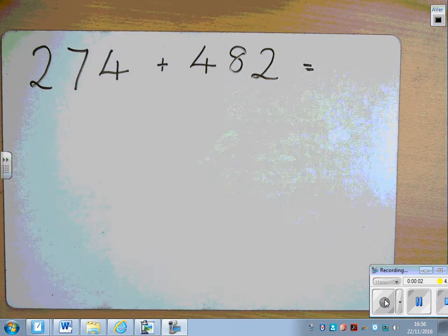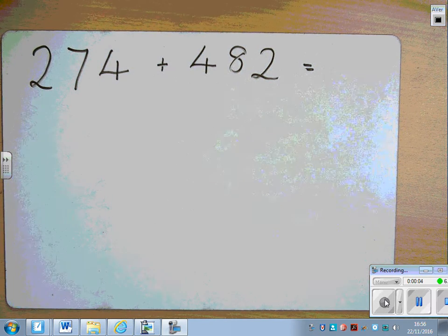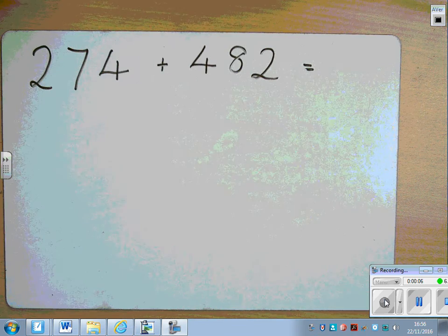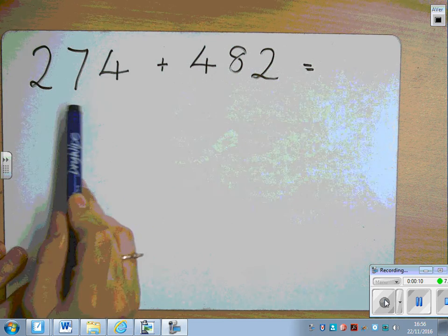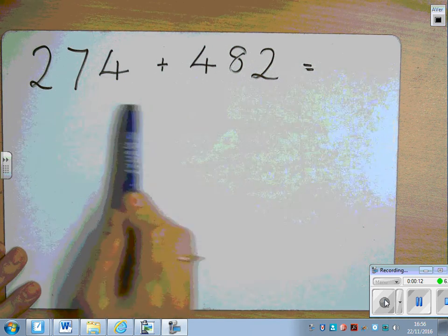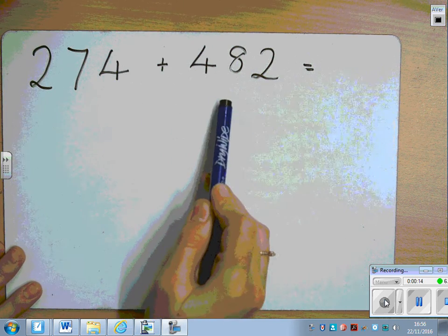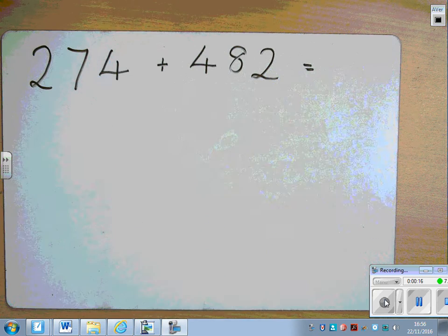So today we are focusing on a written method for addition, the column method. Here we have 274 add 482 equals something.